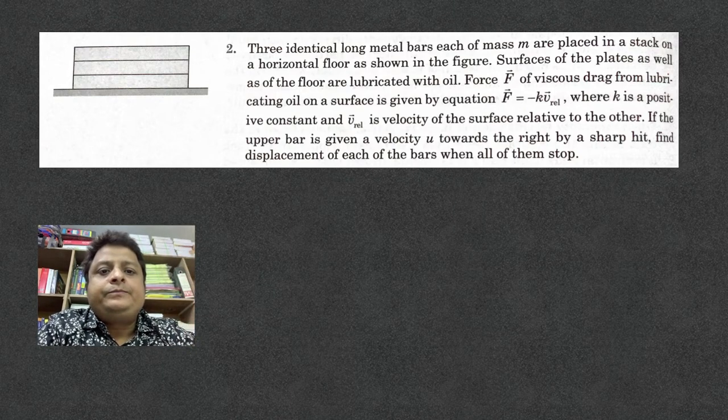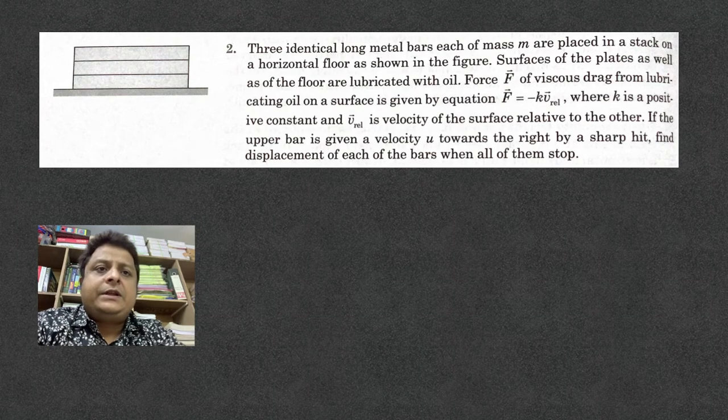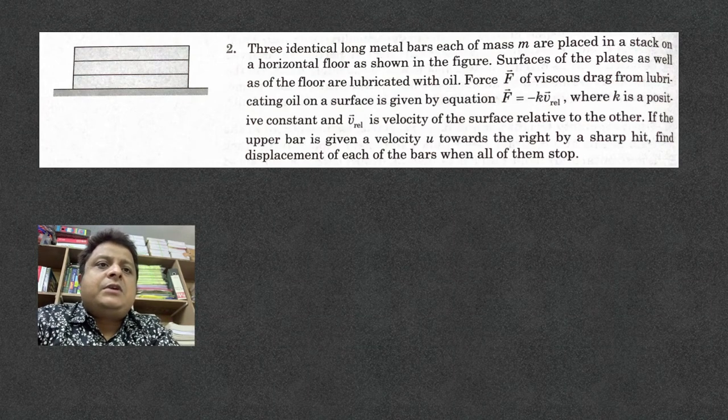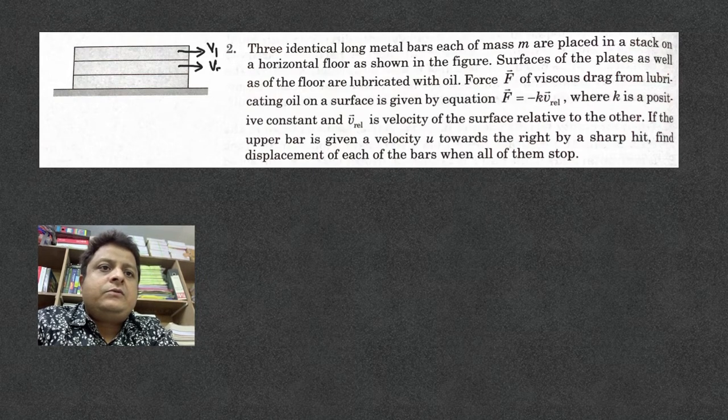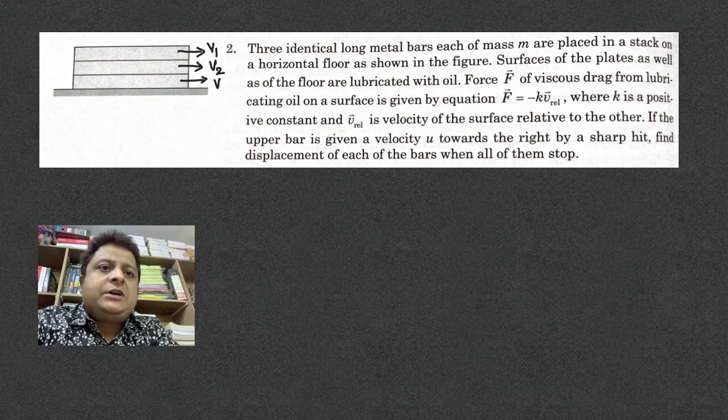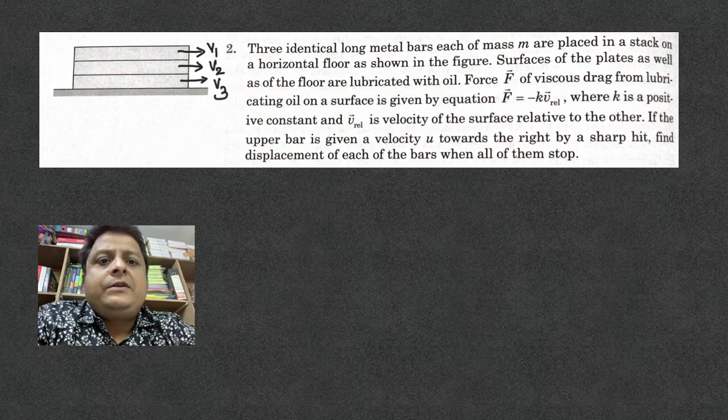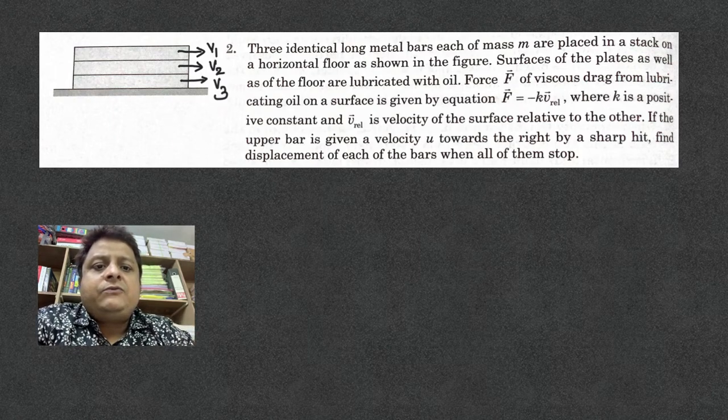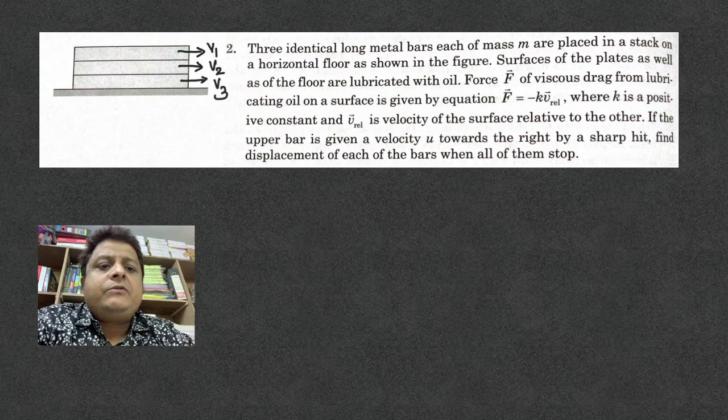So let us begin. First we will assume, let's name the bars: velocity of the upper bar is v1, just below it's v2, and the lowest bar is v3. v1, v2, and v3 vary with time, and at last when they stop, v1, v2, and v3 each will be equal to zero.